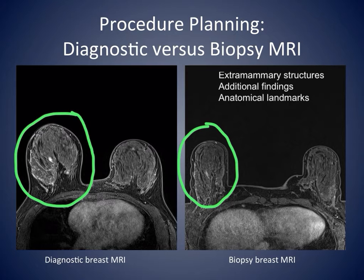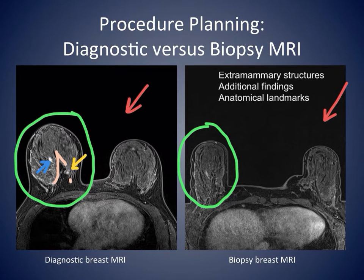The diagnostic breast MRI on the left shows the enhancing lesion to be targeted in the center of the right breast, close to the edge of the breast tissue and retromammary fat. It also shows a few enhancing foci posteriorly in the same slides. The MRI with the breast in the grid on the right shows the lesion more vague, confirming the anatomy of the breast parenchyma and retromammary fat and identifying the small enhancing foci. Extramammary structures such as the heart, chest wall, and liver can also be used as anatomical landmarks, keeping in mind differences related to positioning and respiratory phase.